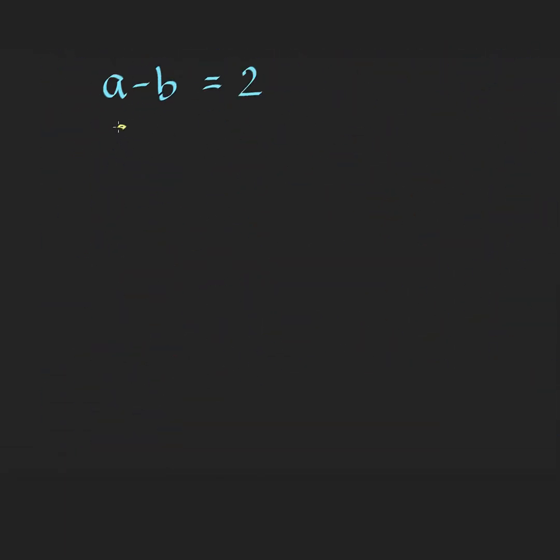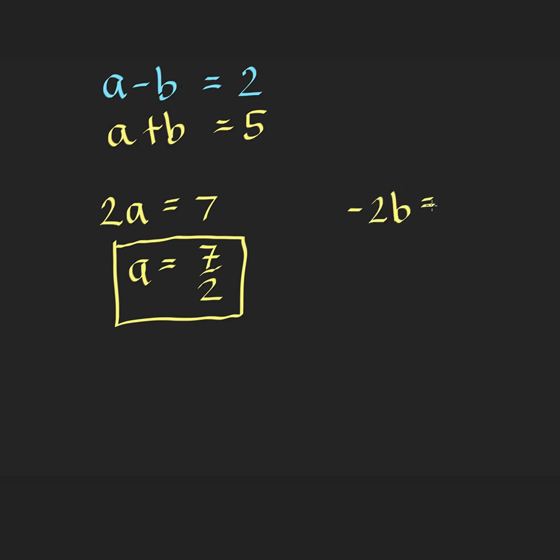We have A minus B equals 2, and A plus B equals 5. This means that 2A equals 2 plus 5, which is 7, or A equals 7 halves. Then subtracting this system of equations, negative B minus B is negative 2B, equals 2 minus 5, which is negative 3, or B is equal to positive 3 halves.